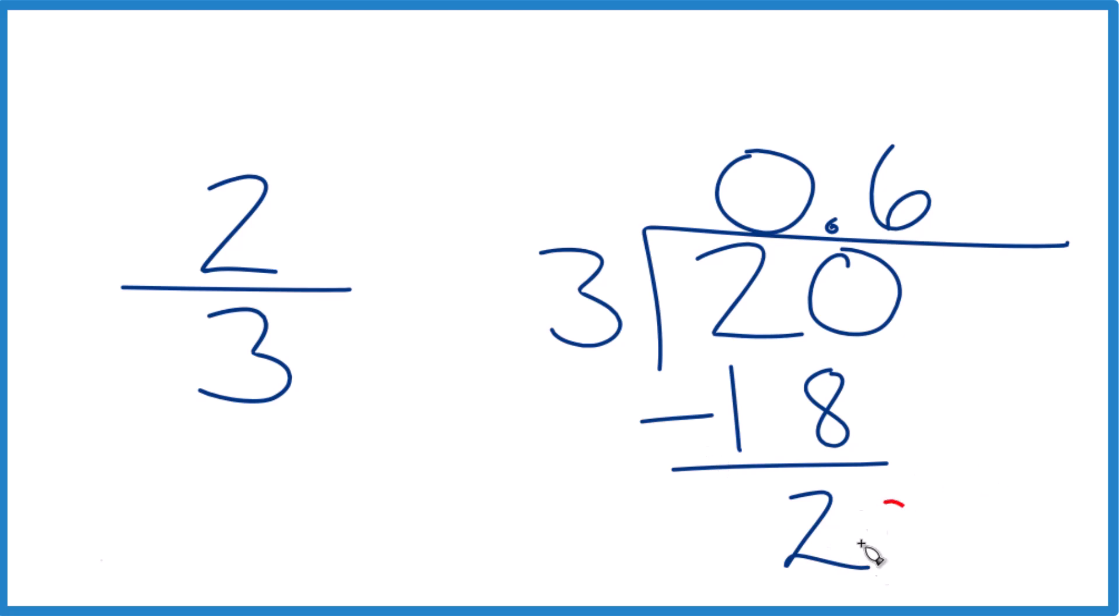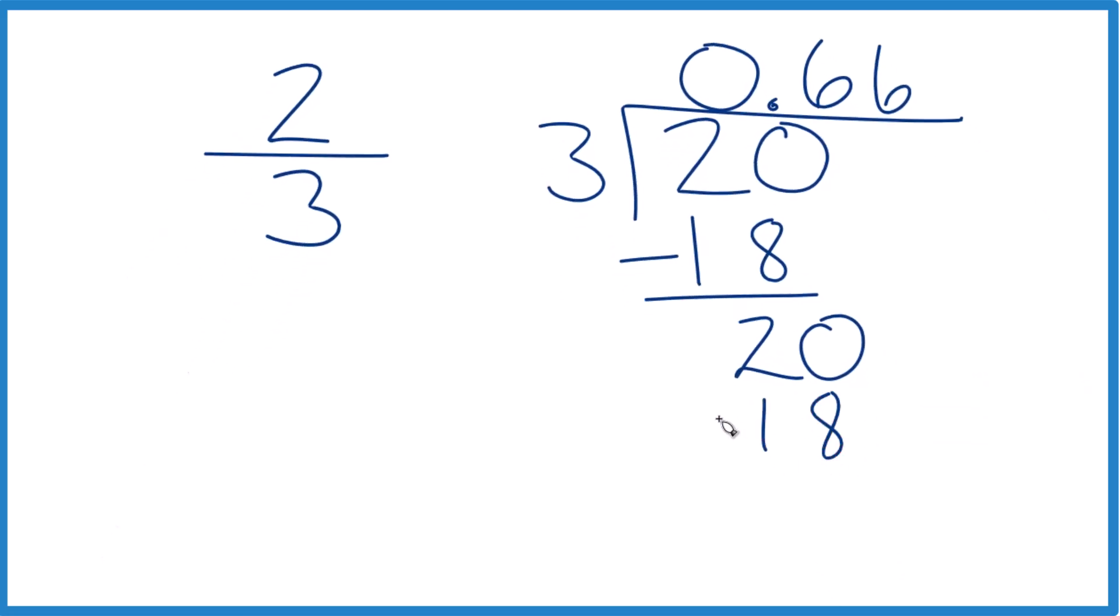Three doesn't go into two. We call it 20. We move over one. Now we said six times three is 18. Subtract, and we get two. Doesn't go into two. Call it 20. And you can see what's happening.